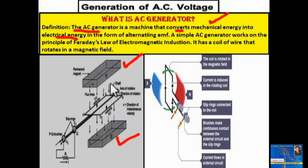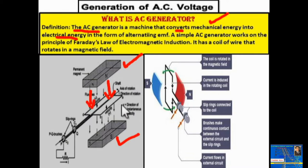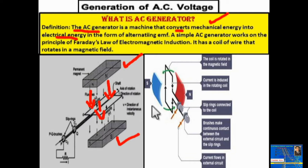There is a uniform magnetic field — the magnetic lines of force originating from the north pole are going towards the south pole. This is a uniform magnetic field; this flux is denoted as flux density B.